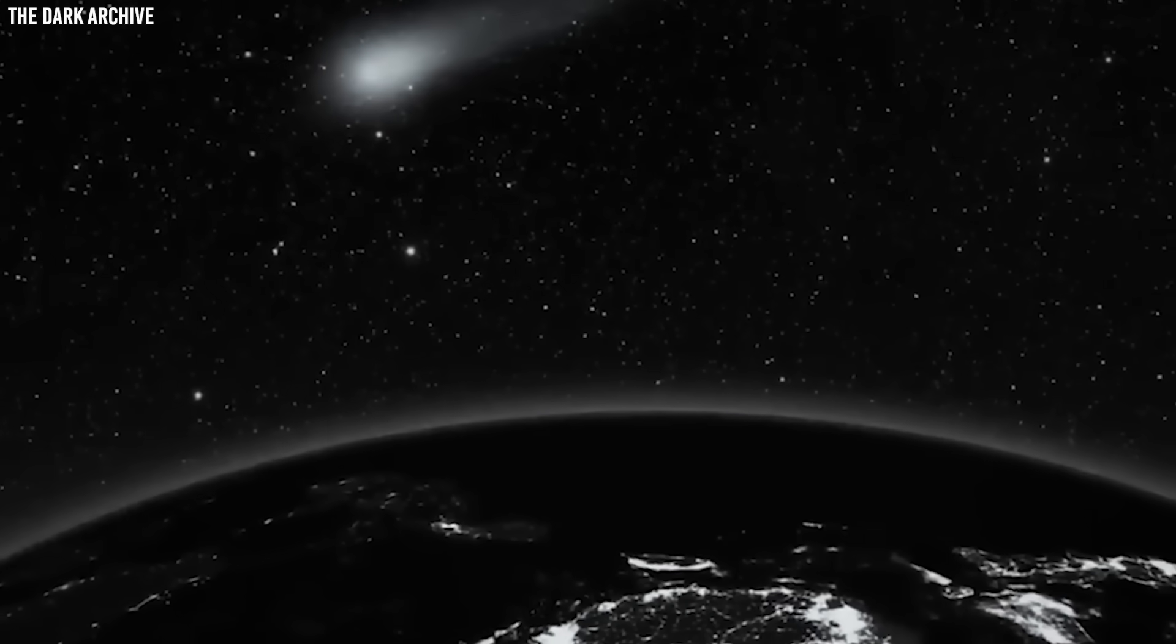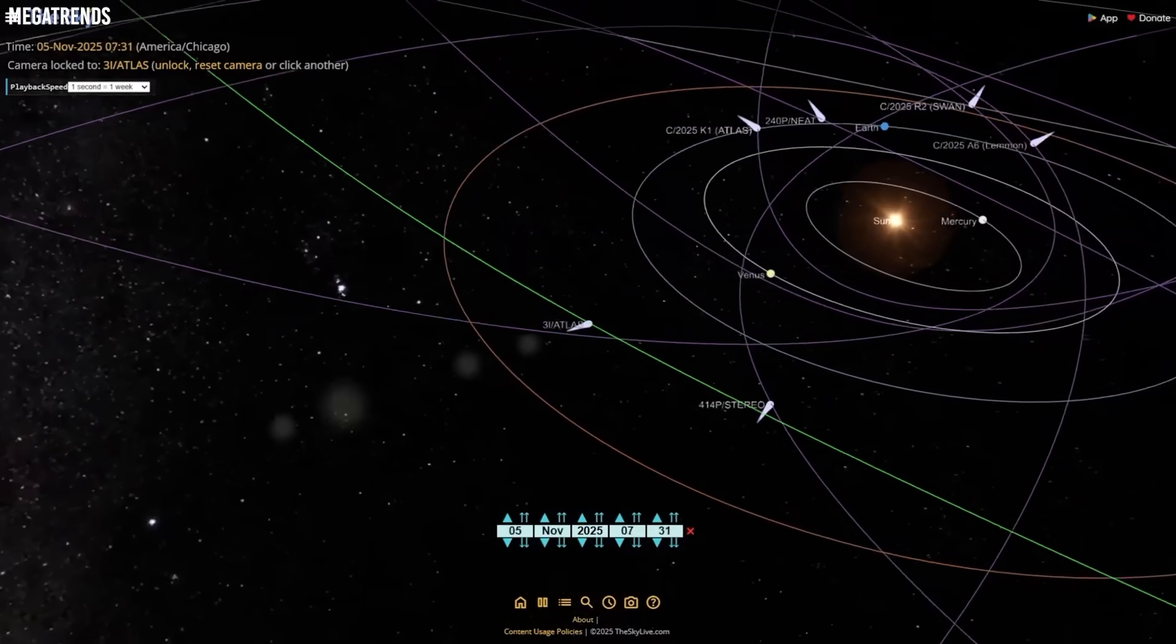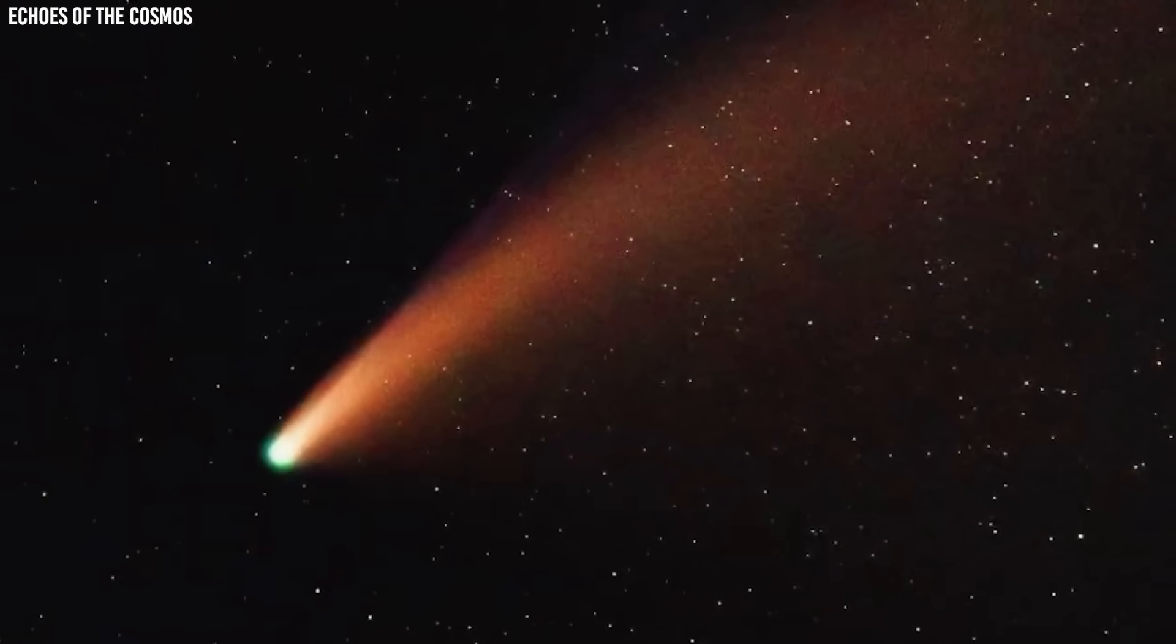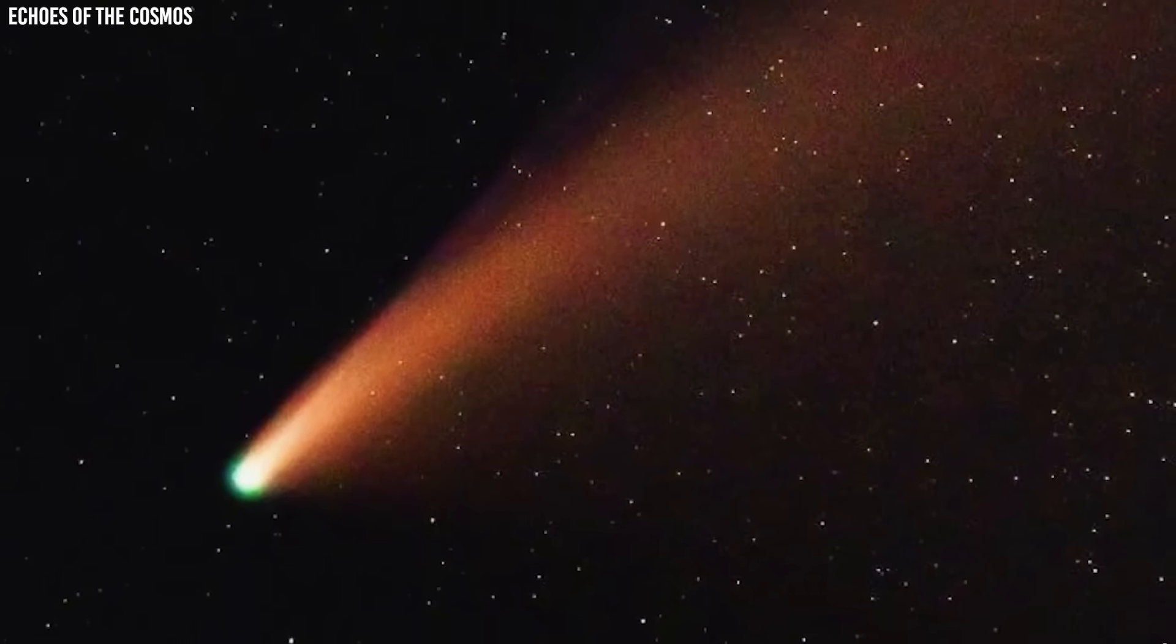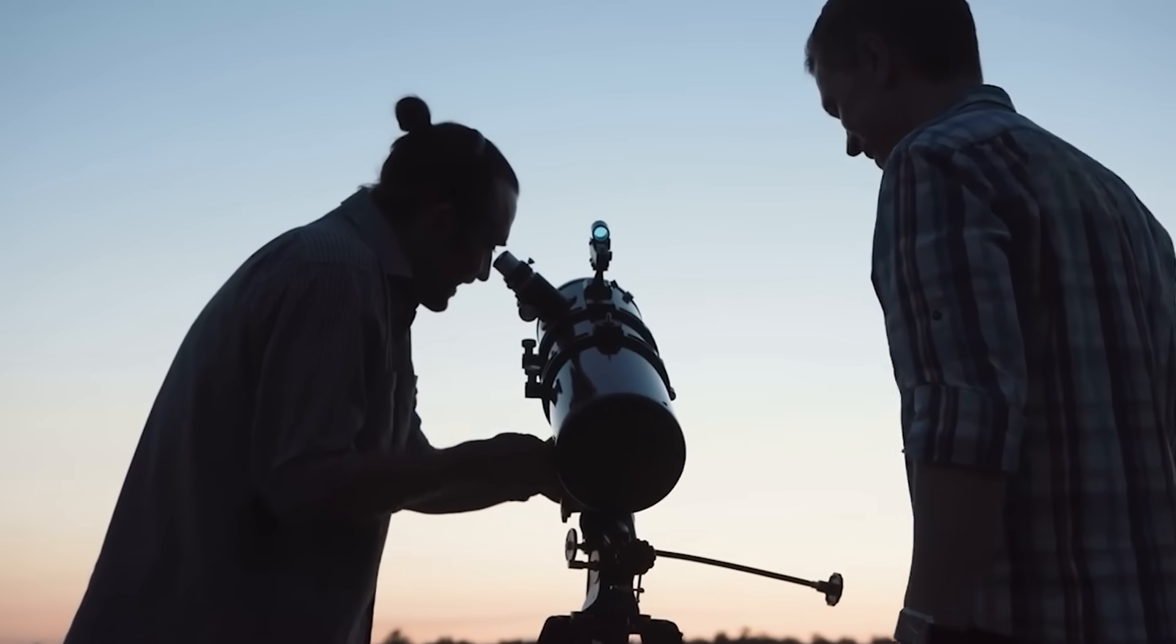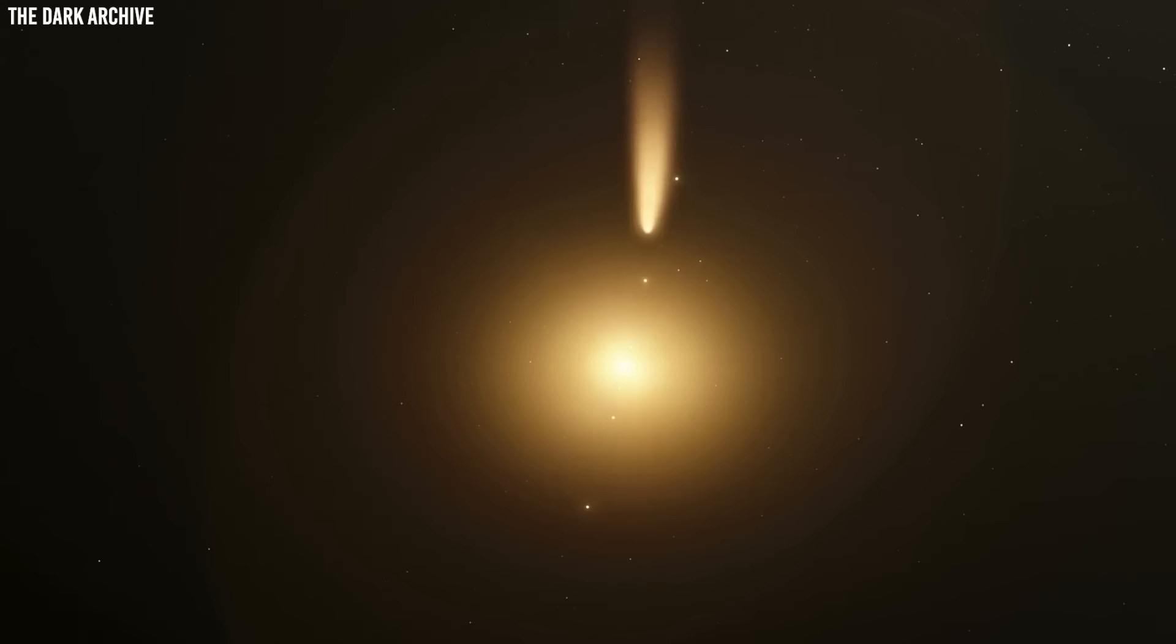The size of the comet's nucleus plays a huge role in whether it survived. Bigger comets are generally more robust, while smaller ones are more likely to crumble. Unfortunately, we don't know how big SWAN's nucleus actually is. From this distance, even our best telescopes just see the bright cloud of gas and dust around it. The actual solid part could be anywhere from a few hundred meters across to several kilometers wide.